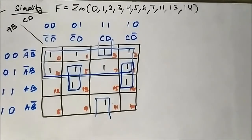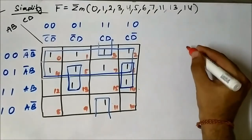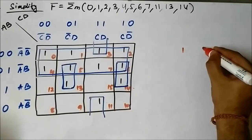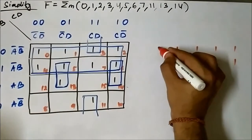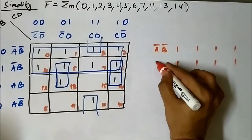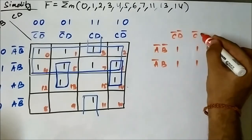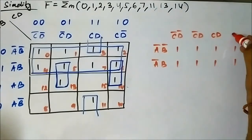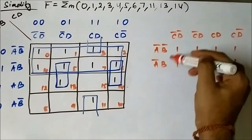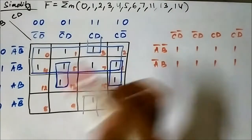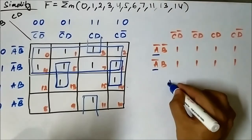Now grouping is done. We have to identify the common variables. First, let us consider the big group — the octet. The horizontal variables are: a bar, b bar, a bar, b, b. Looking at the horizontal side, a bar, a bar, a bar is common from the horizontal side — a bar is common.